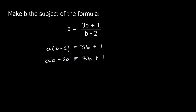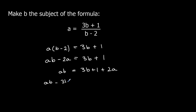I need to get my b terms on the same side. So if I add 2a to both sides: ab equals 3b plus 1 plus 2a. Then take 3b away from both sides: ab minus 3b equals 1 plus 2a. So my b terms are on the same side and everything else is on the other side. I'm going to factorize out the b.